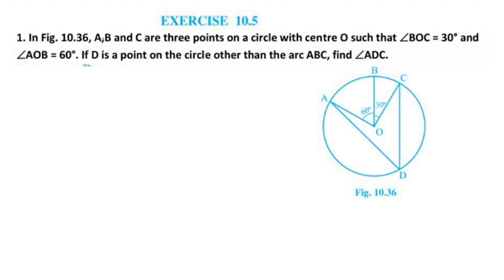In figure 10.36, A, B and C are three points on a circle with center O, such that angle BOC is equal to 30 degrees and angle AOB is equal to 60 degrees.